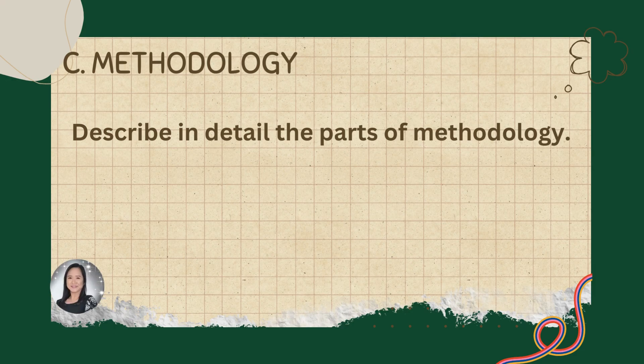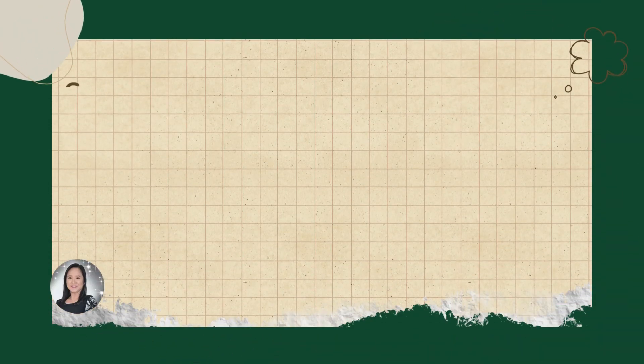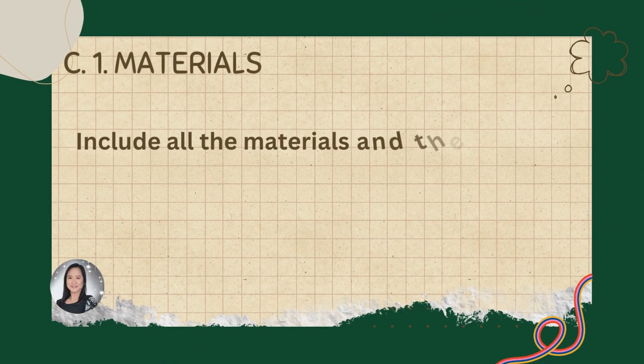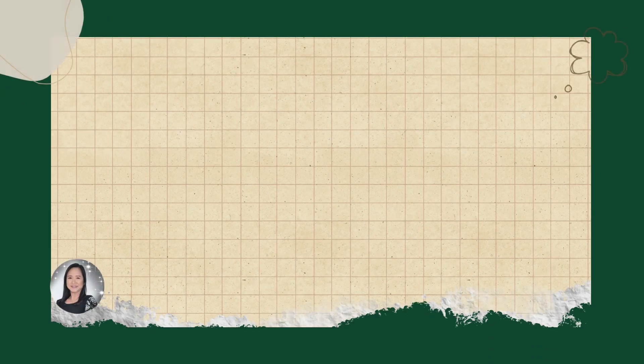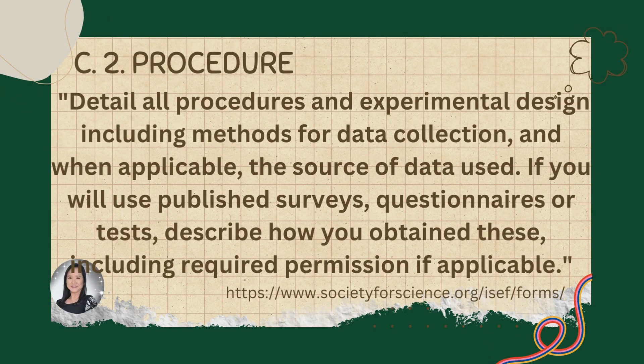Part C is the methodology. In here, you have to describe in detail the parts of your methodology. This includes the materials, numbered as C.1 — include here all the materials and their quantity. Another part of the methodology is the procedure, numbered as C.2. Detail all procedures and experimental design, including the methods for data collection and, when applicable, the source of data used.